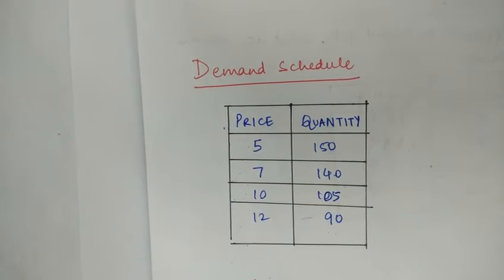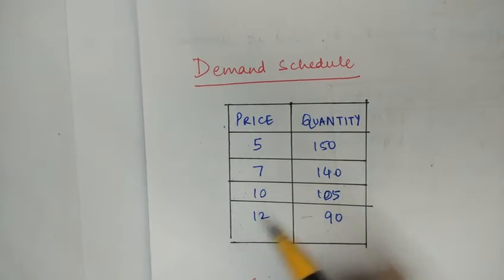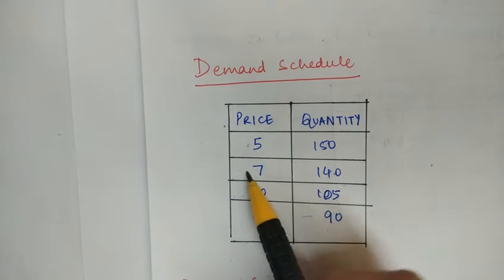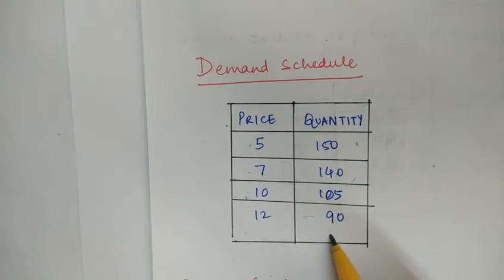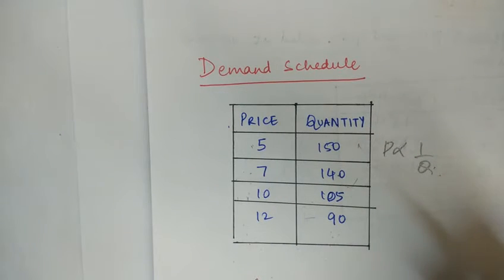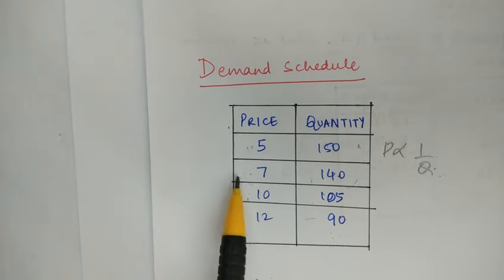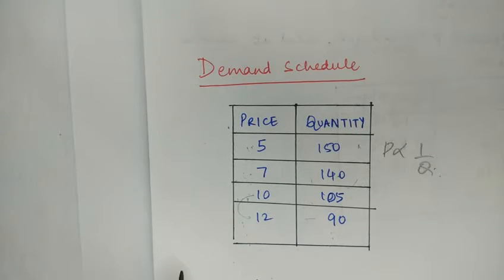A demand schedule is a tabular representation of different prices and quantity demanded at various prices. As the price is increasing, the quantity demanded is falling, showing an inverse relationship between price and quantity demanded as per the law of demand. As the price increases from 5 to 7, the quantity demanded falls from 150 to 140. As the price decreases from 12 to 10, the quantity demanded is increasing.